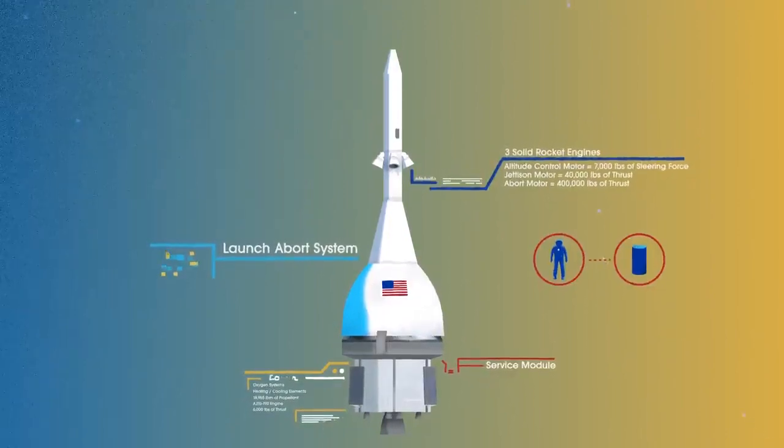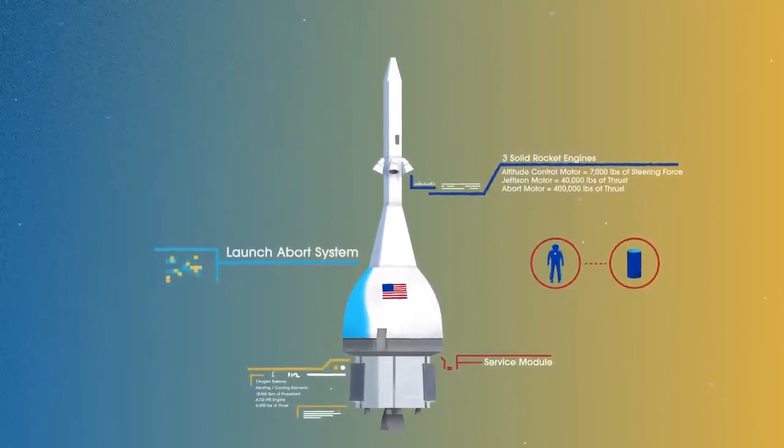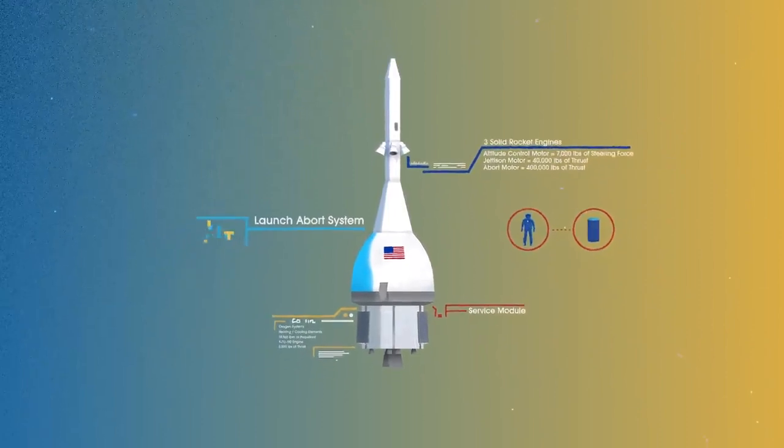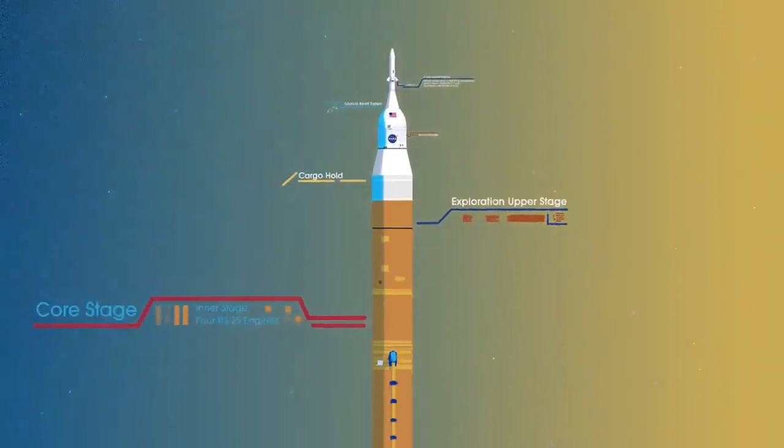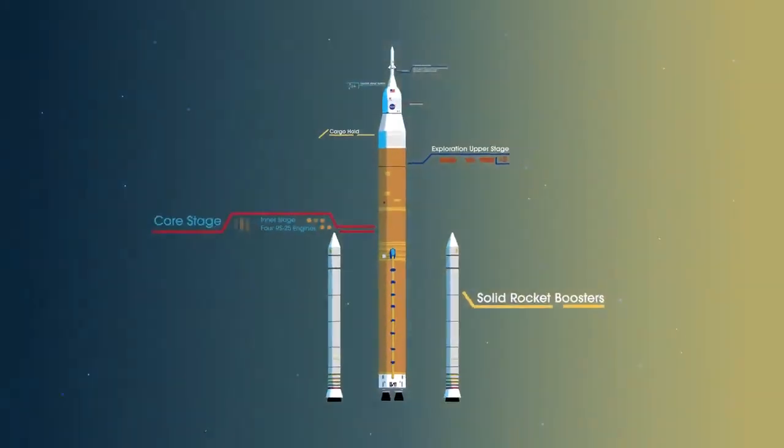To accomplish the task of launching our crew and heavy payloads, NASA is building the Space Launch System, comprising of a cargo hold, an exploration upper stage, a massive core stage, and two extended solid rocket boosters.